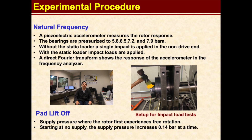The first step we took was to determine the natural frequency of the system. We did this by conducting a simple impact load test in which we placed an accelerometer on one side of the rotor and used a rubber mallet to hit the opposite side. A frequency analyzer shows the Fourier transform of the accelerometer readings, which depict a clear peak at a certain frequency, and we take this peak to represent the natural frequency. We did this for supply pressures of 5.8, 6.5, 7.2, and 7.9 bar, both with and without the static loader installed. Determining the pressure at which the rotor lifts off is also fairly straightforward. We started with the bearings completely unpressurized and slowly added pressure in increments of 0.14 bar until the rotor could suddenly spin freely, which is very noticeable by attempting to spin the rotor by hand. We took this pressure to be our lift-off pressure.